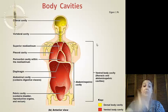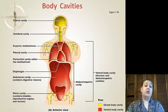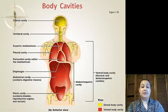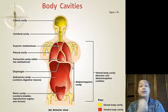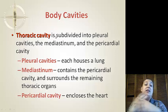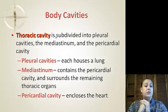Looking at it from the anterior, or front, view: we have the cranial cavity, the vertebral cavity, and then our ventral cavity, which is more to the front and covers up the dorsal or back cavity. These back cavities still continue down, but the ventral cavity covers them. So we have our thoracic cavity, the diaphragm that separates it from our abdominal pelvic cavity. Inside the thoracic cavity it is subdivided into the pleural cavities, the mediastinum cavities, and the pericardial cavities.